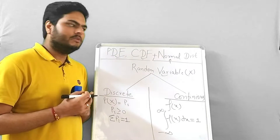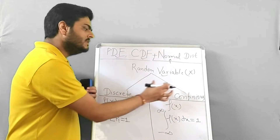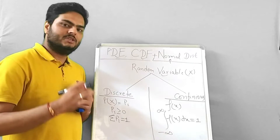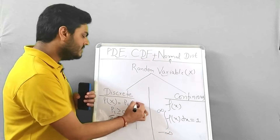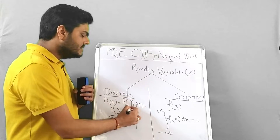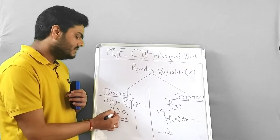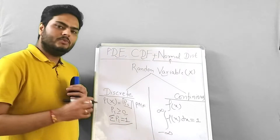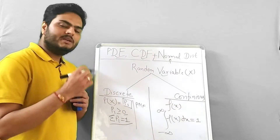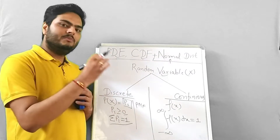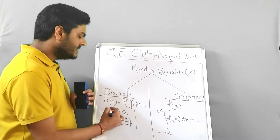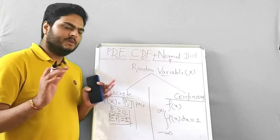In my last video, I was discussing random variables, which can be of two types: discrete or continuous. For discrete random variables, there is a concept of PMF, or probability mass function. The probability of a random variable x equals p_i, such that p_i is greater than or equal to 0, and if we sum all the probabilities, the sum should be 1. For example, if you toss a coin, either heads or tails will come — each has probability 0.5, and both sum to 1. This is the probability mass function.